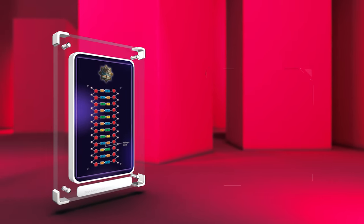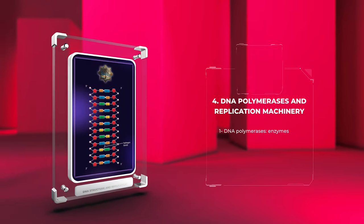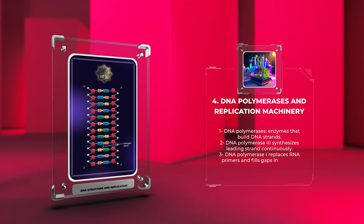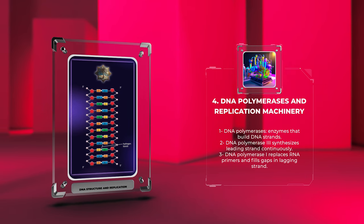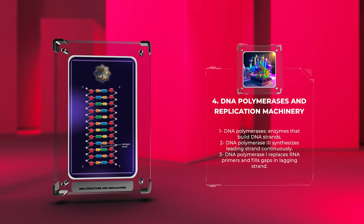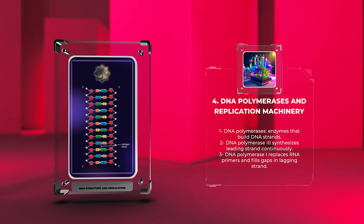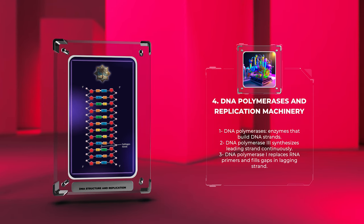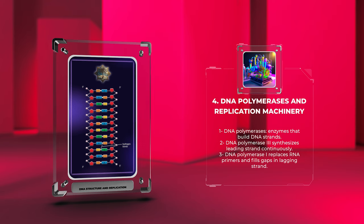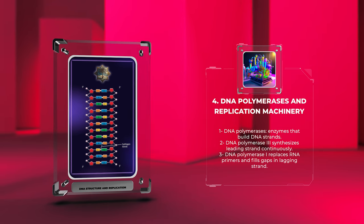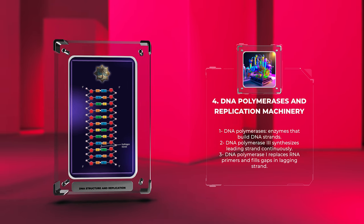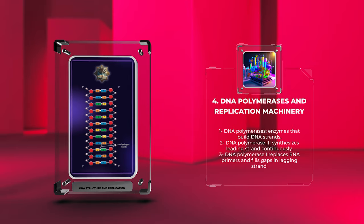DNA polymerases are enzymes that build DNA strands by connecting nucleotides. Different DNA polymerases have specific roles in DNA replication. DNA polymerase III synthesizes the leading strand continuously, while DNA polymerase I replaces RNA primers and fills gaps in the lagging strand.